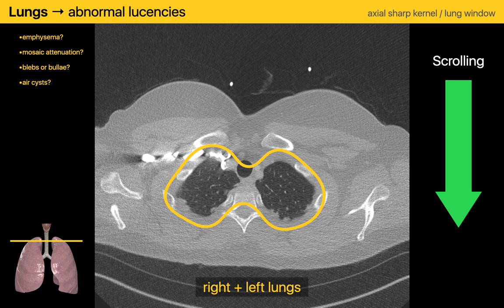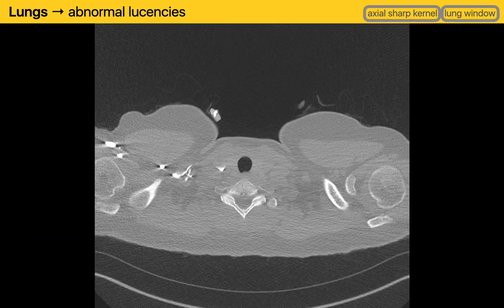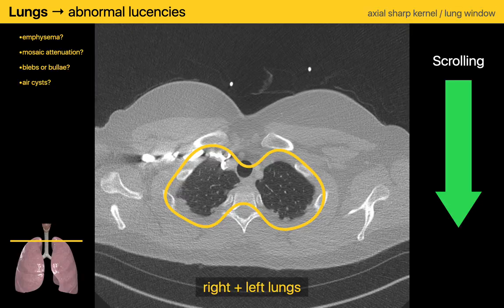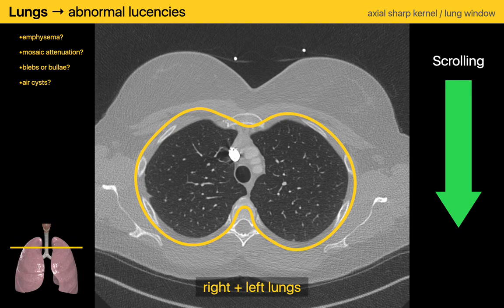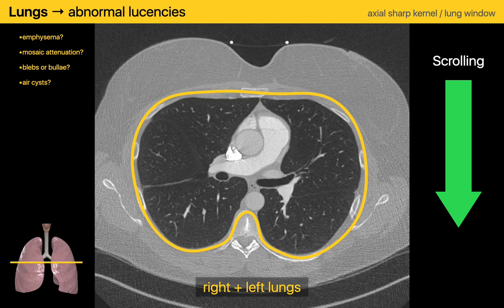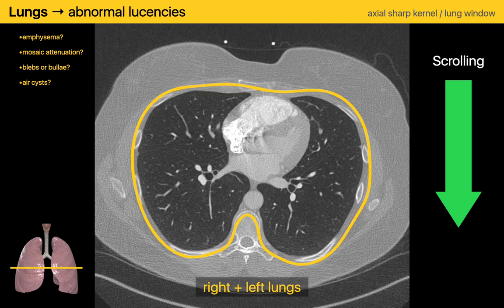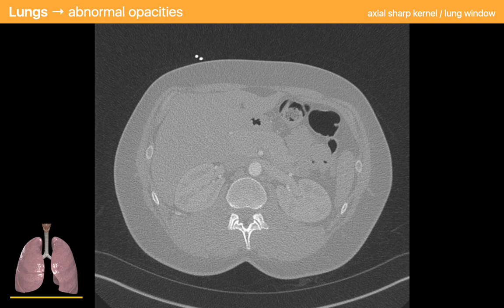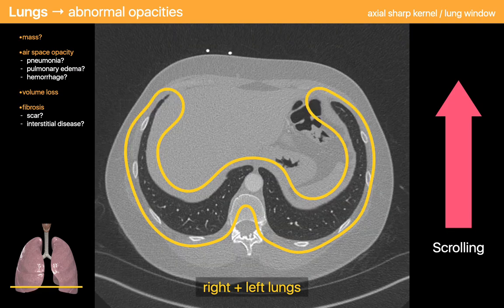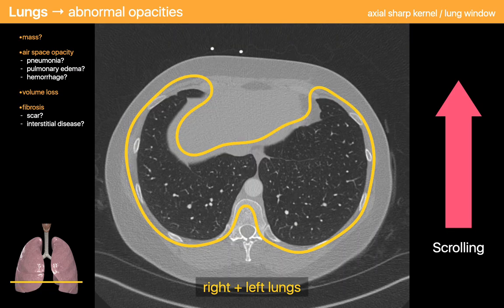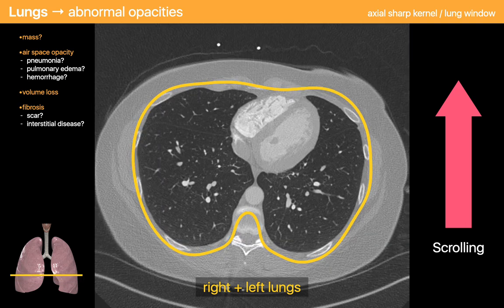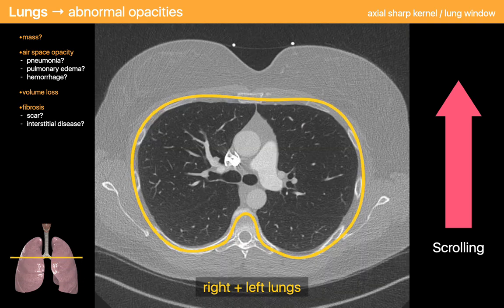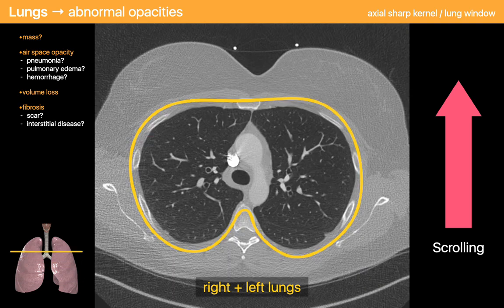With inspection of the pleural space completed, I begin reviewing the lungs on a sharp kernel and lung window in three sweeps. The first sweep is for hyperlucent findings — emphysema, blebs, bullae, and air cysts. The second sweep is for macroscopic opacities — masses, consolidation, fibrosis, atelectasis, interstitial opacities, and ground glass opacities.